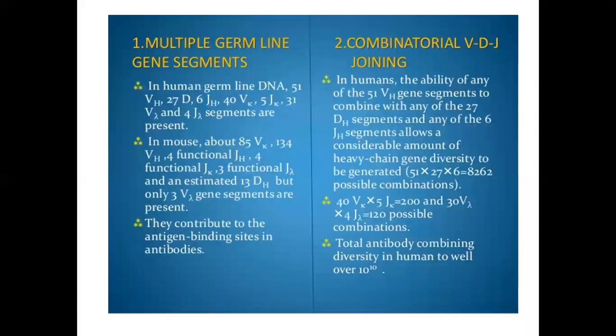The seven mechanisms are: one, multiple germline gene segments; two, combinatorial V-D-J joining; three, junctional flexibility; four, P-region nucleotide addition; five, N-region nucleotide addition; six, somatic hypermutation; and seven, combinatorial association of the light and heavy chains. By these means, different and variable antibodies can be generated.